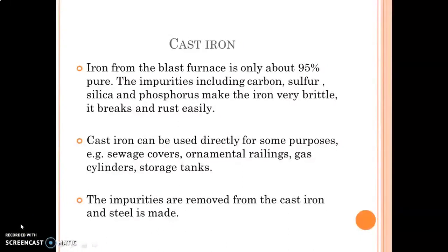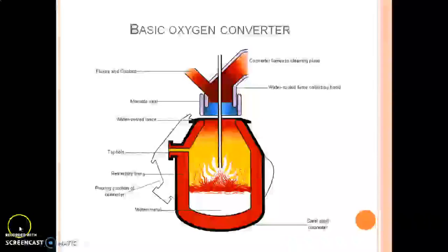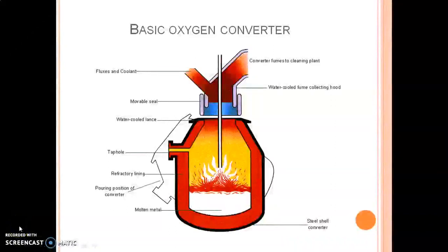These impurities are removed and the cast iron is made into steel. Cast iron contains impurities like carbon, sulfur, silicon, and phosphorus. These impurities must be removed to get the steel.